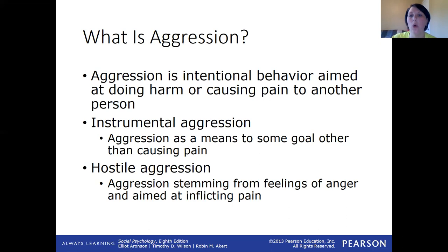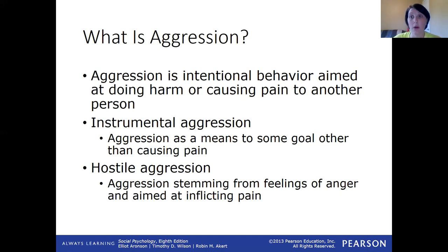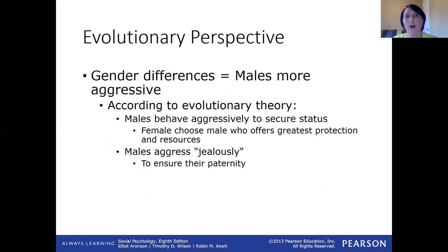Instrumental aggression is all about a goal — using aggression as a means to achieve that goal. You're not angry and you're not intentionally causing pain. Hostile aggression, on the other hand, is when you're actually angry and your aim is to hurt that person as much as possible and inflict pain. For example, if you're playing soccer and somebody says something nasty to you, you don't care about the ball — you want to hurt that person. Your goal is to inflict pain, and it stems from anger.